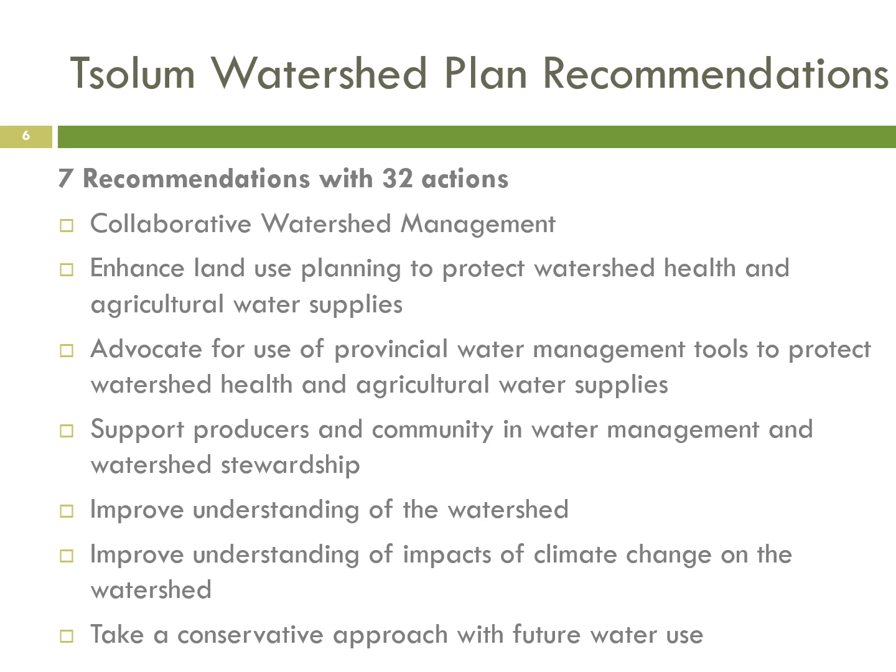The seven recommendations are: to pursue collaborative watershed management; to enhance land use planning to protect watershed health and agricultural water supplies; to advocate for use of provincial water management tools to protect watershed health and agricultural water supplies; to support producers and the community in water management and watershed stewardship; to improve understanding of the watershed; to improve understanding of impacts of climate change on the watershed; and to take a conservative approach with future water use.